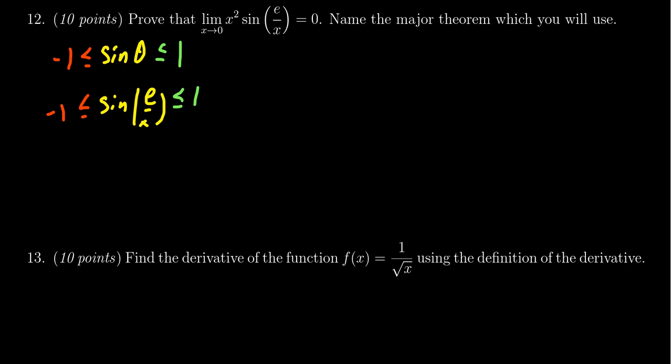If we multiply this inequality by x², we get -x² ≤ x² sin(e/x) ≤ x². That is, x² sin(e/x) is less than or equal to x² and greater than or equal to -x².